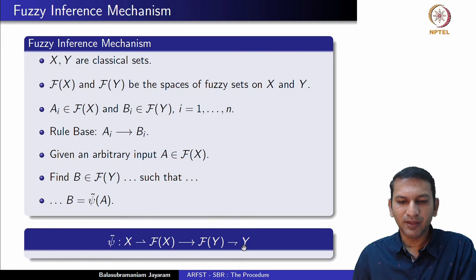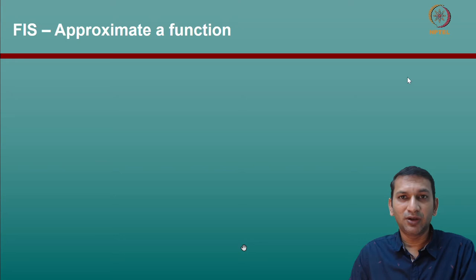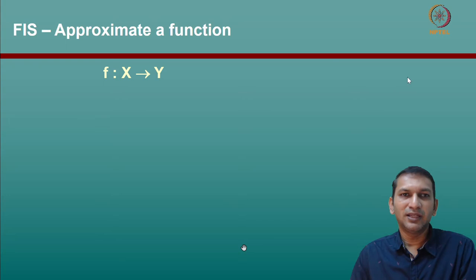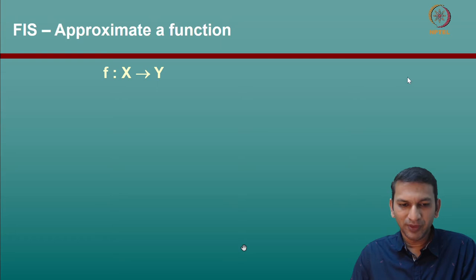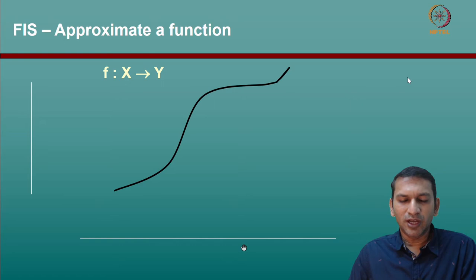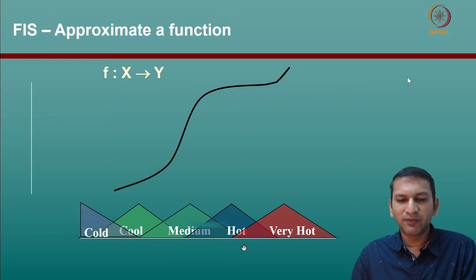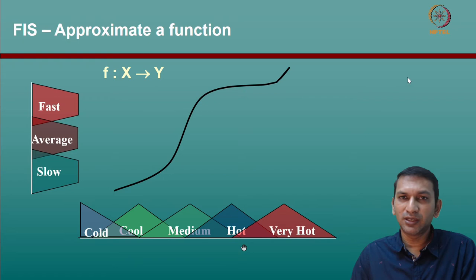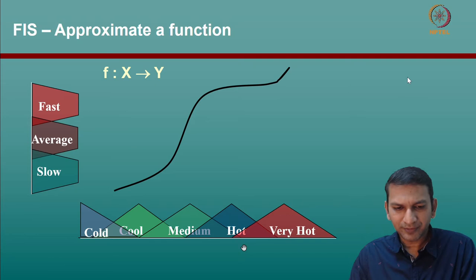A fuzzy inference system approximates a function. Given an f from X to Y, this is what we call the system function — the function inherent in the system describing how the system operates, which mostly we do not know. Assuming this is the function we are trying to capture — the ideal functioning of a control system fitted to an air conditioner — this is what we have done in the previous lecture.